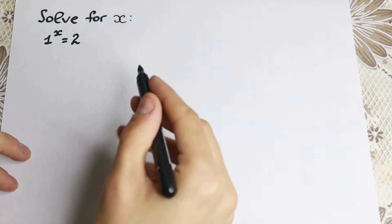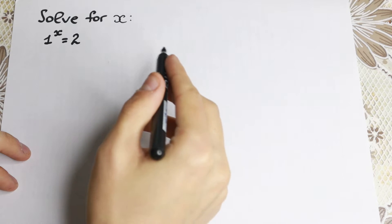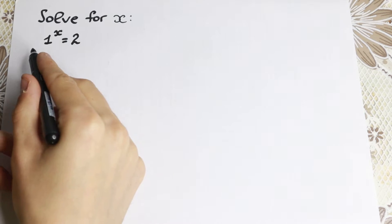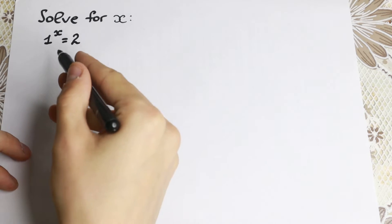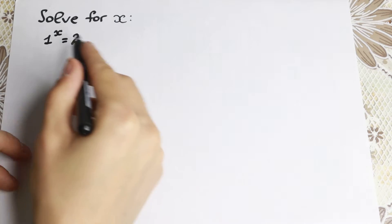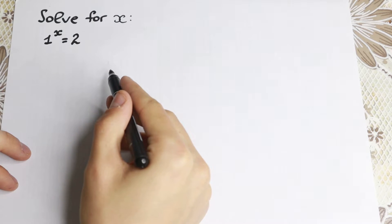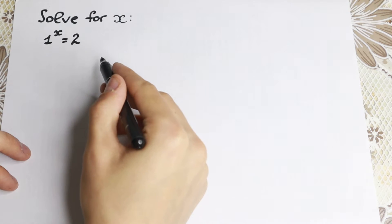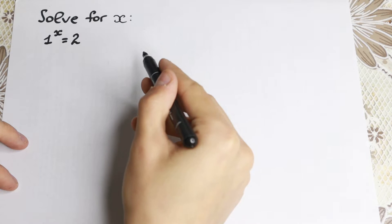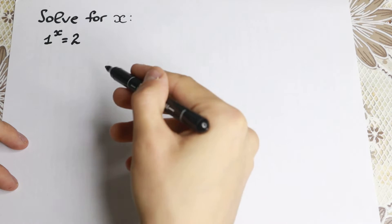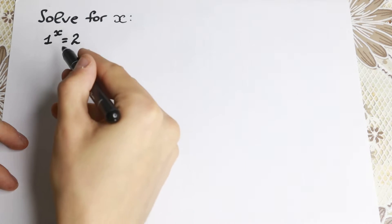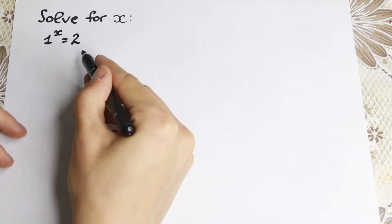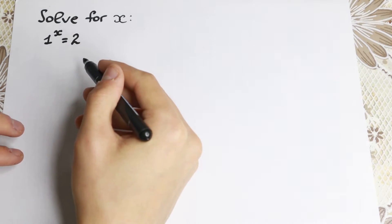Of course we prefer a different kind of problem — for example, 2 to the x equals 3, or 3 to the x equals 10. But in our case we have 1 to the power x equals 2, and we all know that 1 to the x always equals 1. So it's kind of impossible that 1 to the power x equals 2, and we cannot find our x.